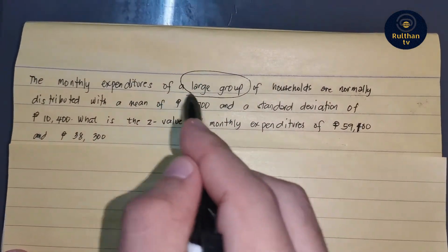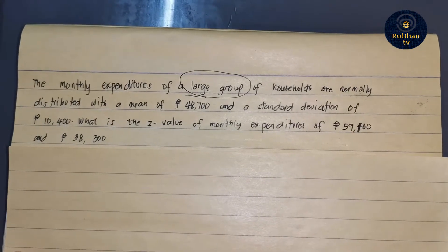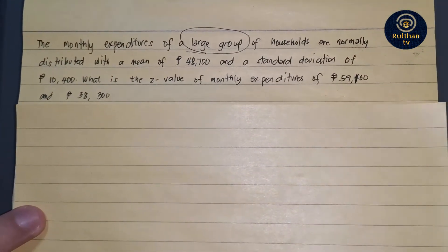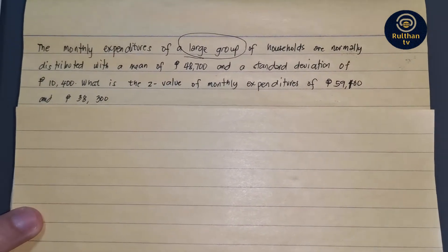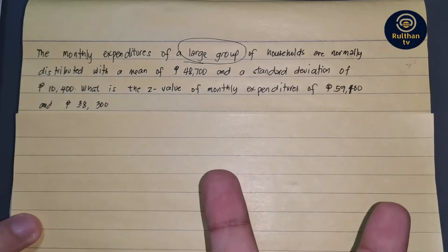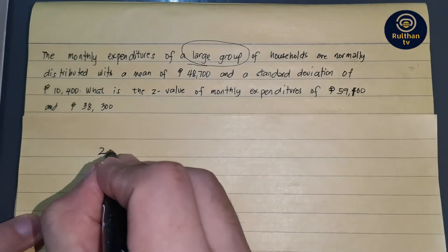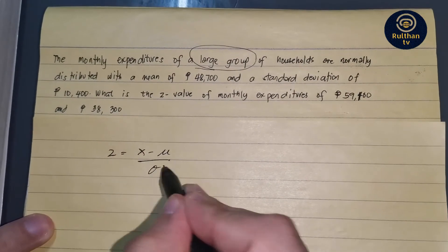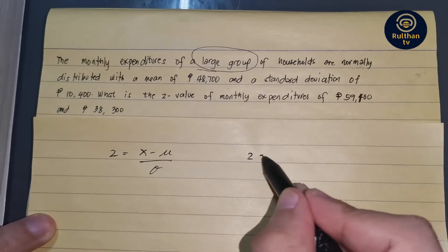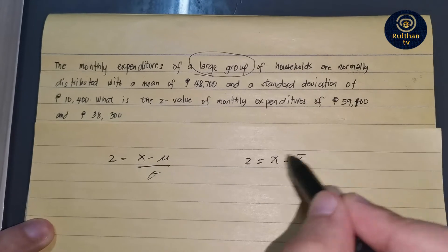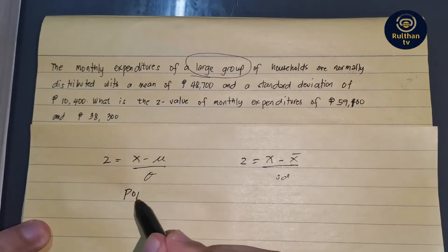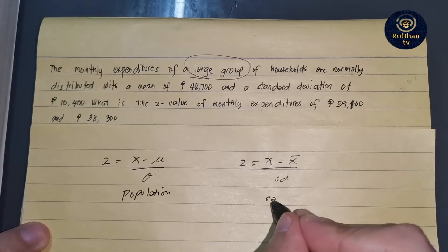Now let me show you our formula. You'll notice that we're talking about a large group of households, so by taking this into consideration, it implies population, because we're using the term 'large group.' There are actually two formulas: the first formula for Z-score is z = (x − μ) / σ, and the other one is z = (x − x̄) / sd.